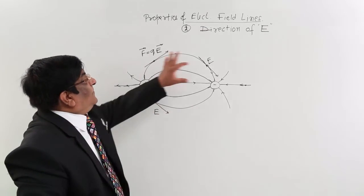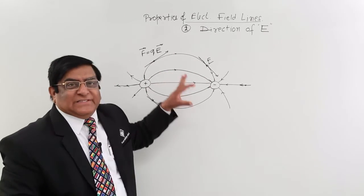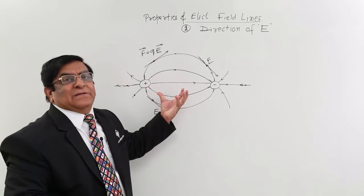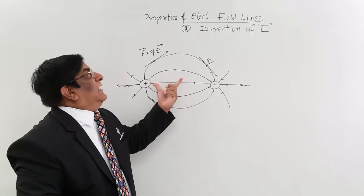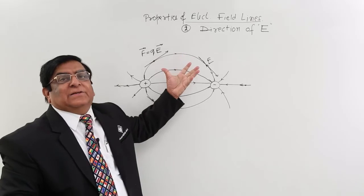So different types of directions are represented in one diagram. This is the benefit of electric field lines and this is one property.